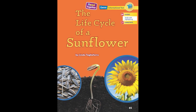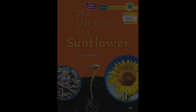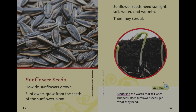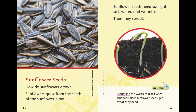The Life Cycle of a Sunflower by Linda Tailleferro. Sunflower seeds. How do sunflowers grow? Sunflowers grow from the seeds of the sunflower plant. Sunflower seeds need sunlight, soil, water and warmth. Then they sprout.